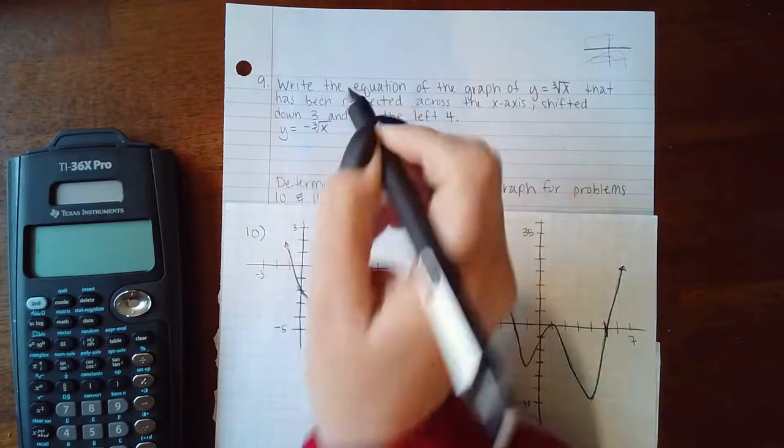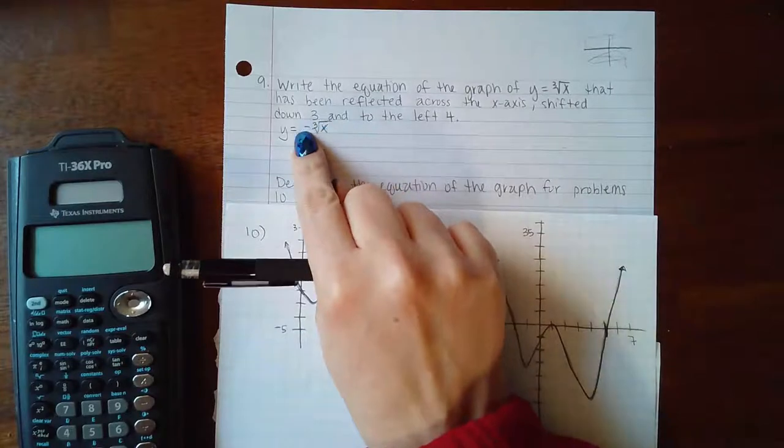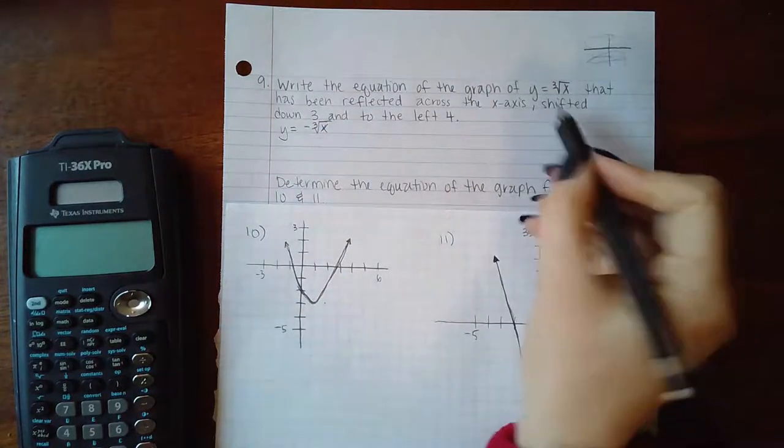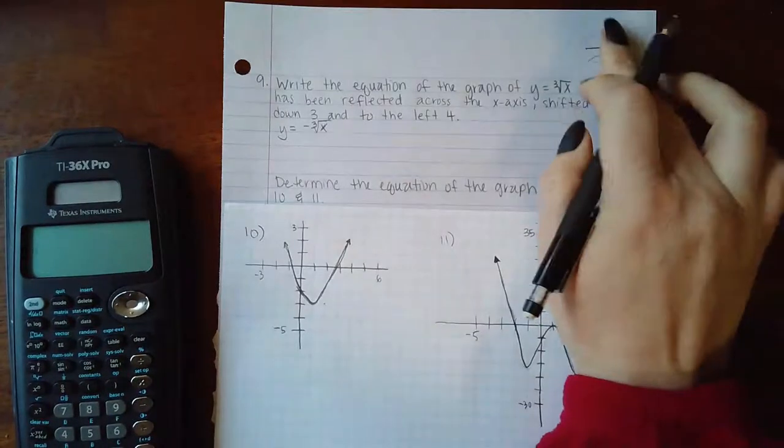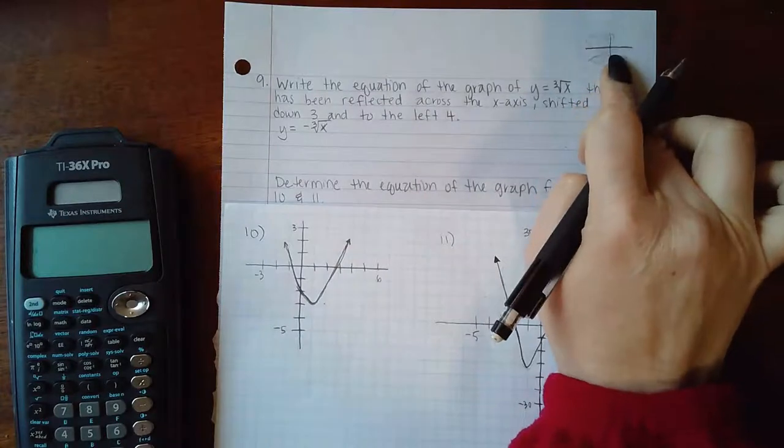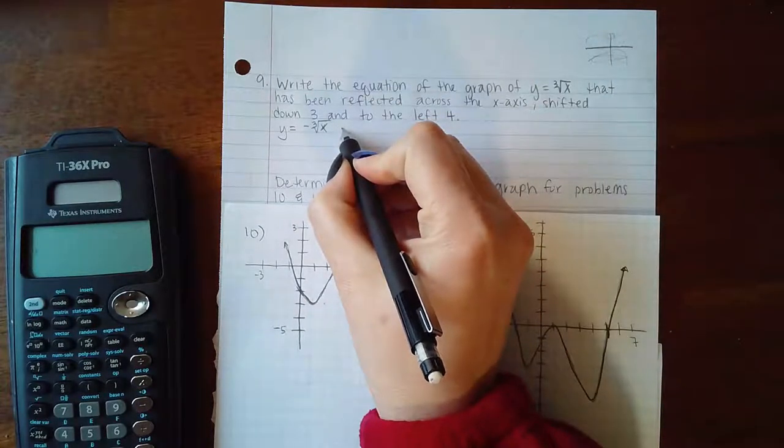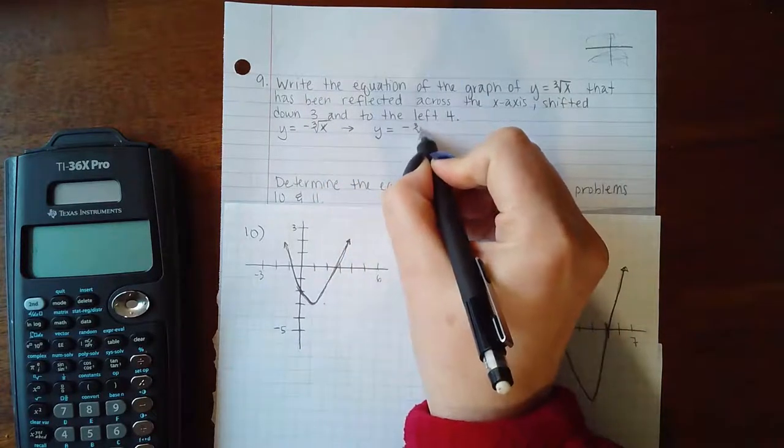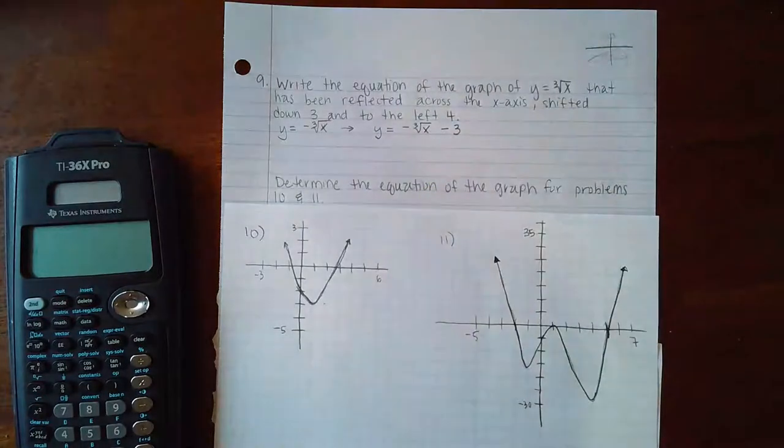Once you know what this y value is, you're going to change the sign. The next thing that happens is it shifted down 3, which means all of the y values of the graph are now going to move downward 3. We're going to end up subtracting 3 from that y value to move it downward 3.